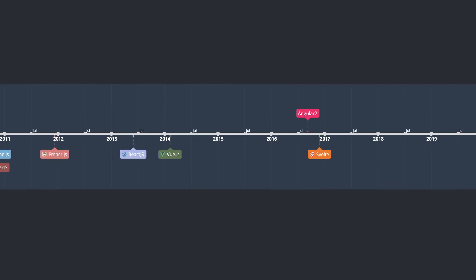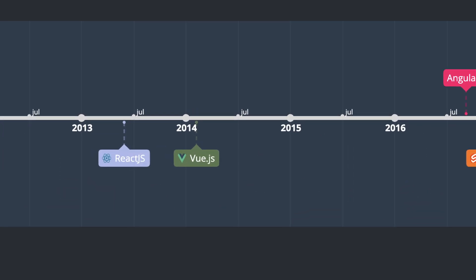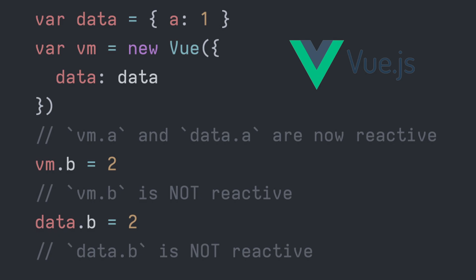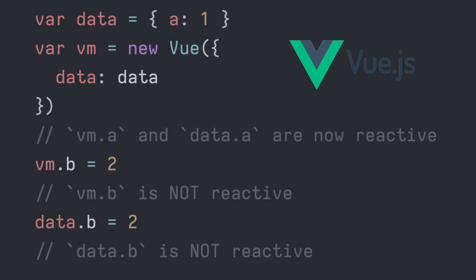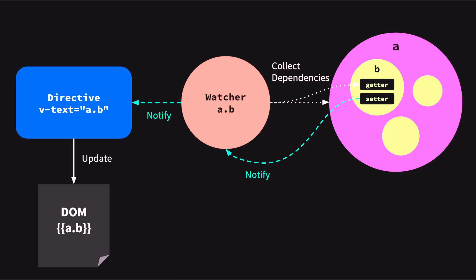Vue quickly became popular for its intuitive and efficient reactive system. When you assign a plain JavaScript object to a Vue instance as its data option, Vue.js processes all its properties and converts them into getters and setters using Object.defineProperty. These getters and setters help Vue.js track and notify changes. Each directive, or data binding, is linked to a watcher that monitors touched properties. When activated, the setter prompts the watcher to update the DOM.